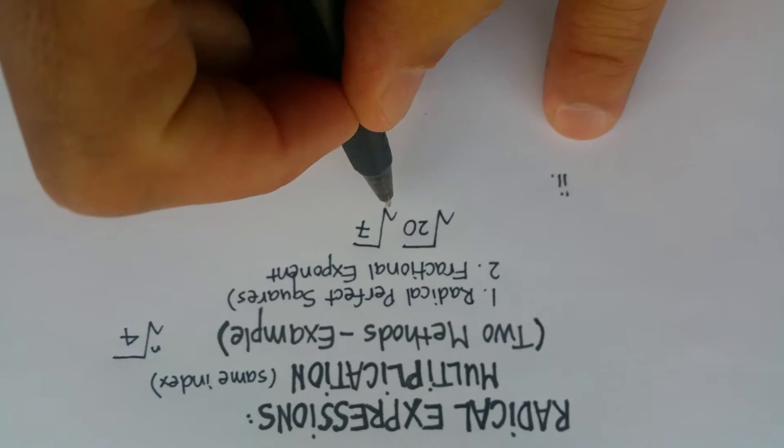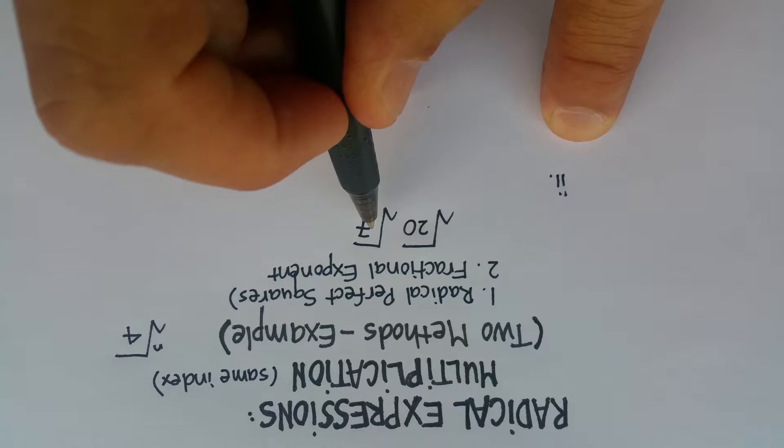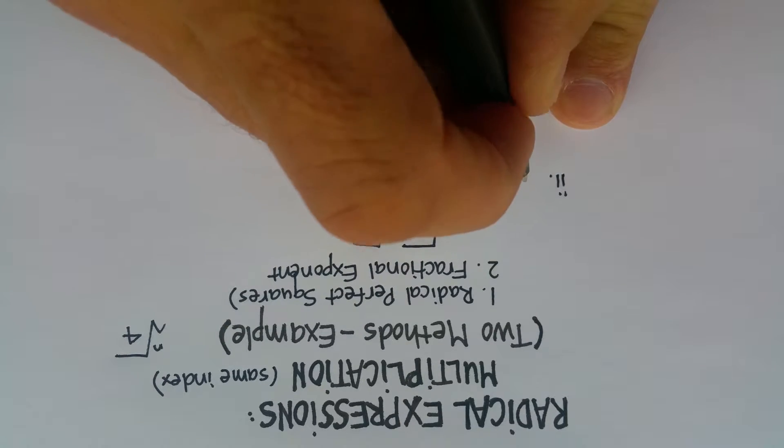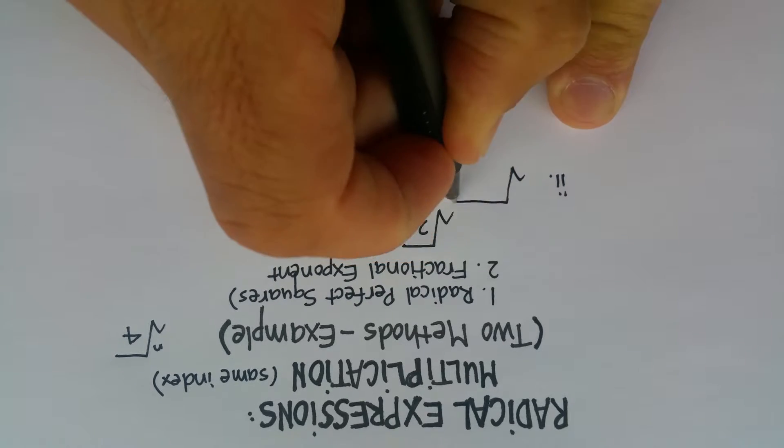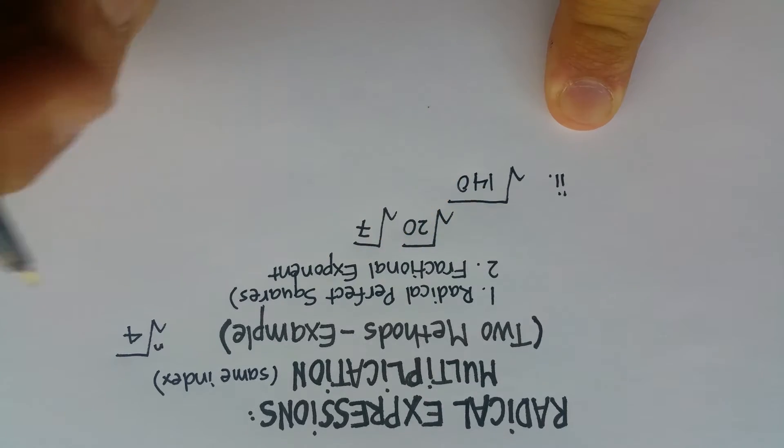So, if this is my problem, and if the indices are the same, you can actually multiply the radicands underneath. So I can just go 20 times 7 and still put it under a square root sign. And that just gives me 140.